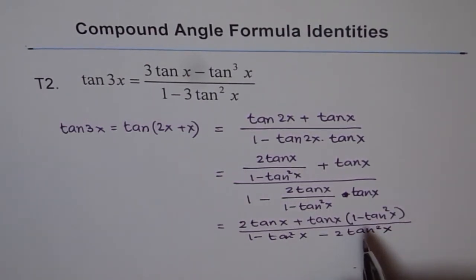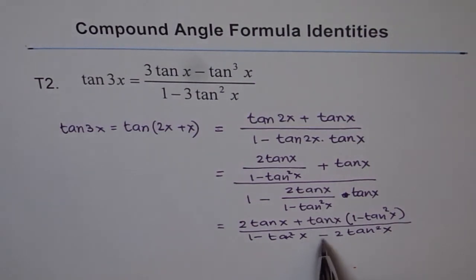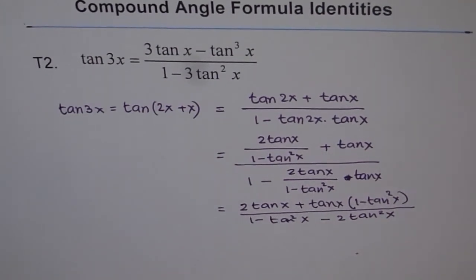So we get 1 minus tan squared x minus 2 tan squared x, and here we have 2 tan x plus tan x when we open it, that makes it 3 tan x minus tan cubed x. I'm running out of space here, so let me push it forward and write down the answer.